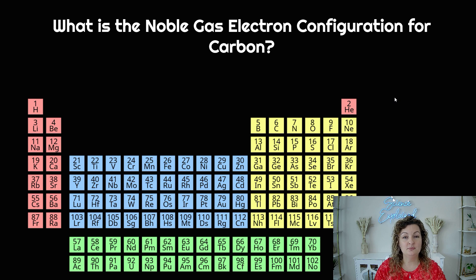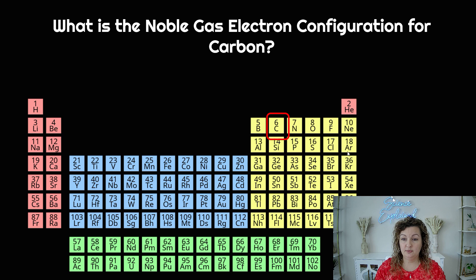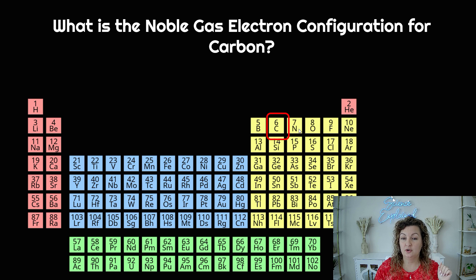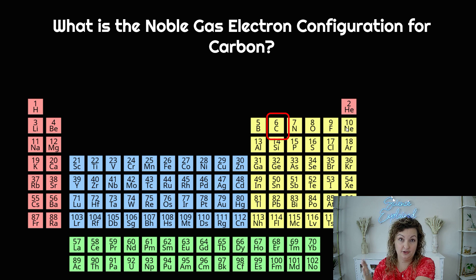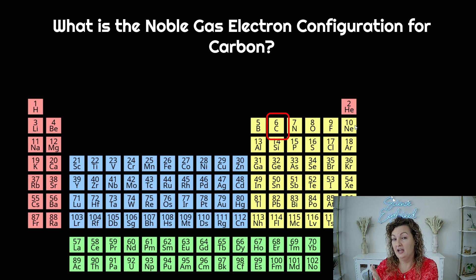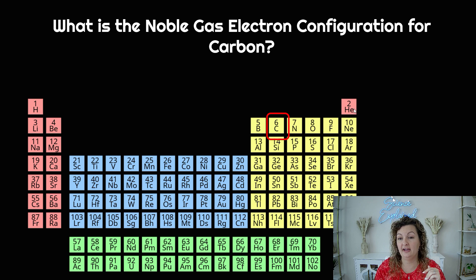So what is the noble gas electron configuration for carbon? First we look for carbon — it is right here. Now I need to look at my noble gases, which are over here on the end, and I need to look for the one that comes before carbon. So I'm not looking for neon — neon occurs after carbon. Carbon is 6, neon is 10, so that's after carbon. I need to go before, or one row up.